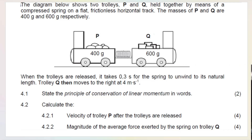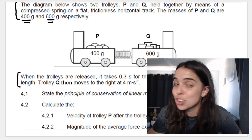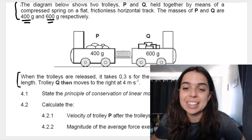Over here we can see a past paper question. Please remember, Grade 12, to always read the little bits of information before and after your picture because not everything is on the diagram. We've got two trolleys P and Q held together by a compressed spring on a frictionless horizontal track. They give me the masses, and the first thing your brain should be telling you is that you cannot leave your mass in grams.